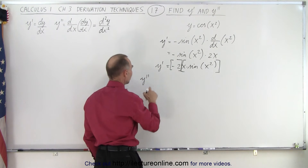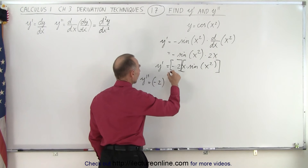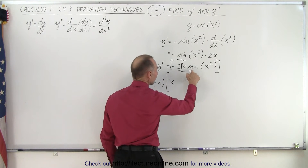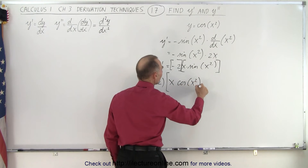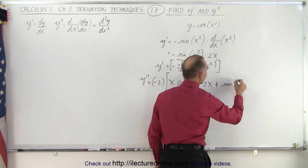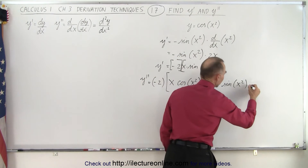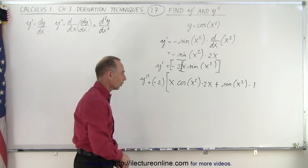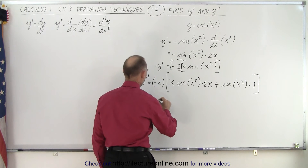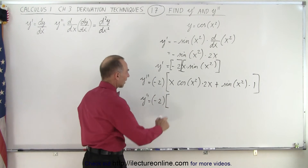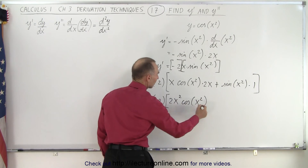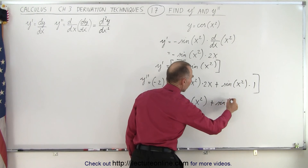So here we have y double prime, that's the second derivative, which is equal to negative 2 times the derivative of this product. So we take the first term, x times the derivative of the second, so that would be the cosine of x squared times the derivative of x squared, so times 2x, plus the second, which is the sine of x squared times the derivative of the first, which is equal to 1. And then we have to simplify that. So y double prime is equal to minus 2 times, and so we have x times 2x, that gives us 2x squared times the cosine of x squared, and then plus the sine of x squared.